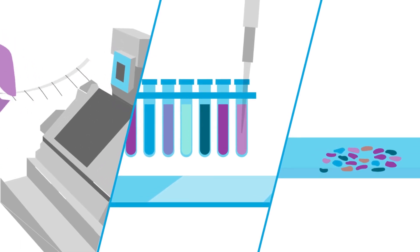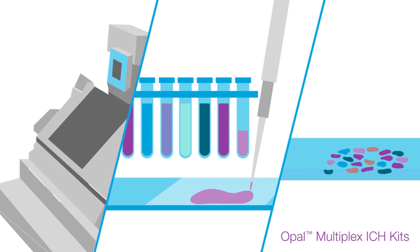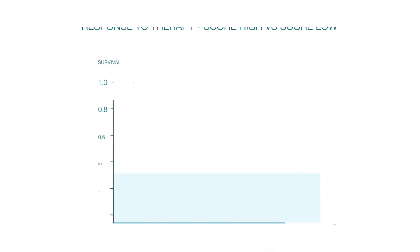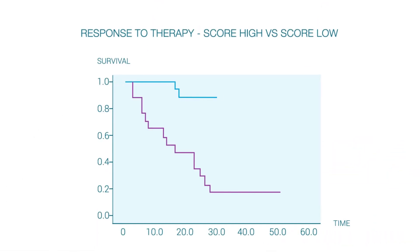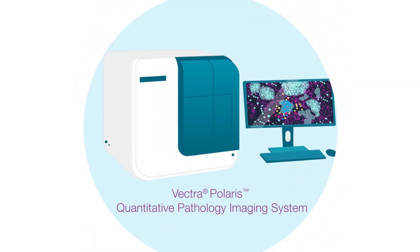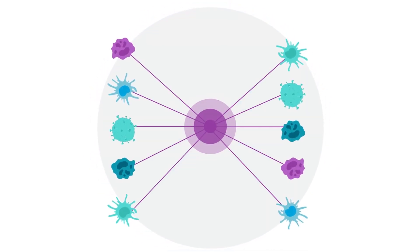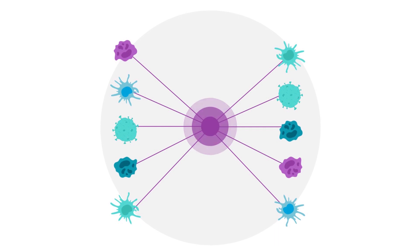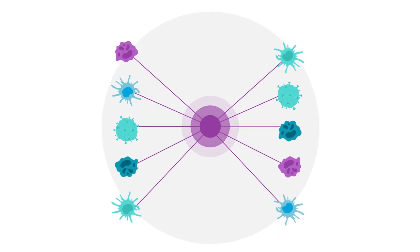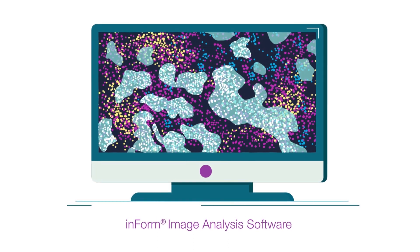With Phenoptix, you can preserve imperative spatial context with advanced multiplex immunohistochemistry staining technology with opal kits, empower faster, better visualization and identification of disease key biomarkers with multispectral imaging technology like Vectra Polaris, and uncover the relationships between specific cell types and between the immune system and tumors with our advanced Inform Image Analysis software that empowers discovery.